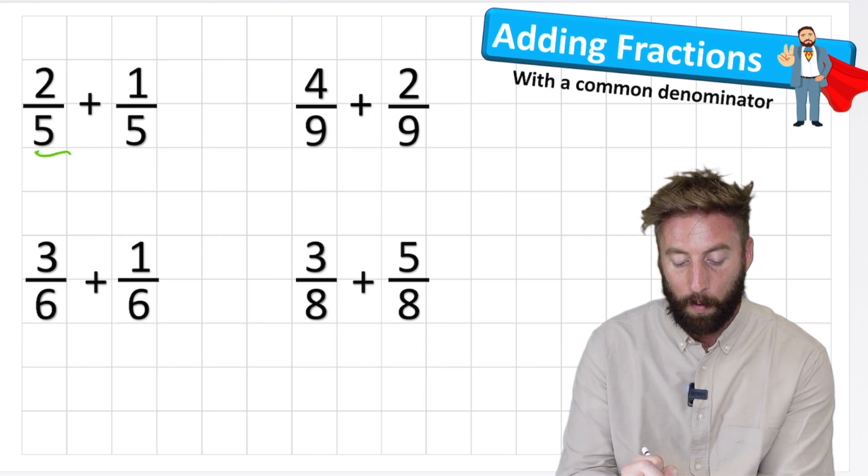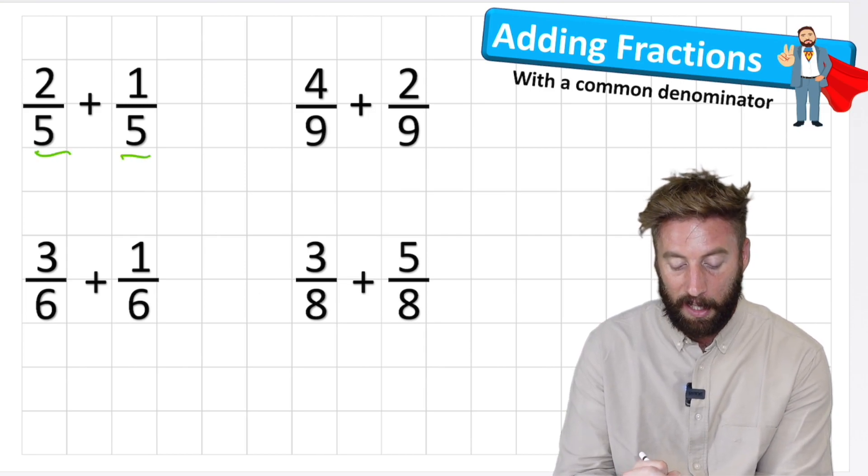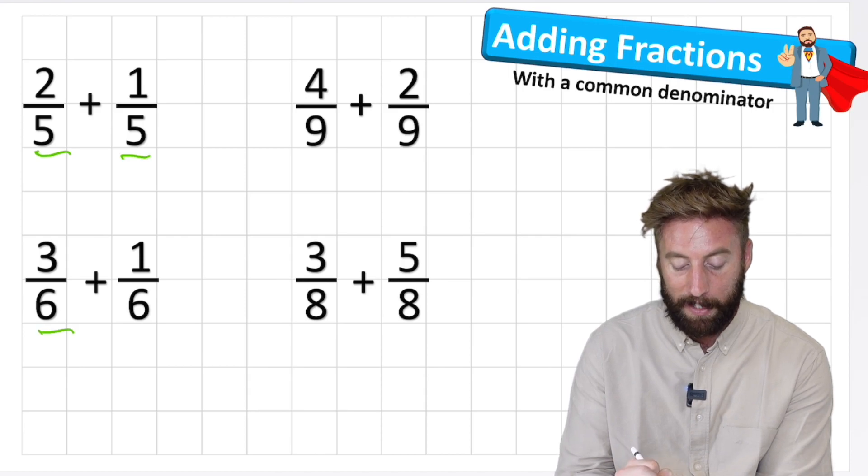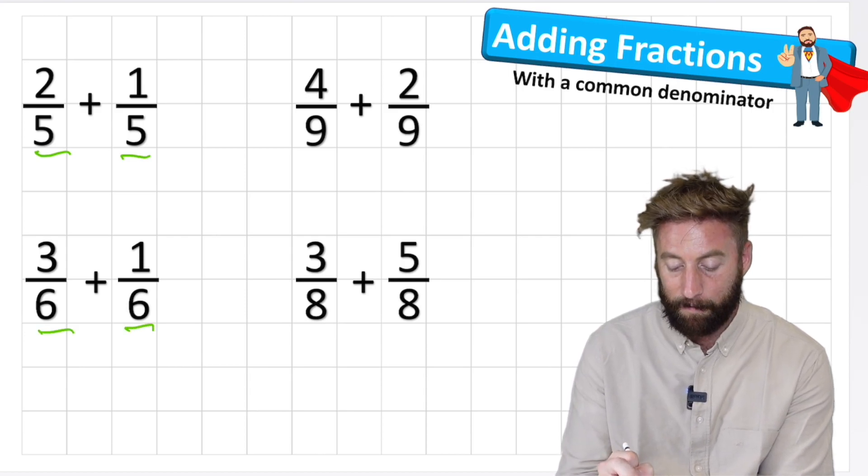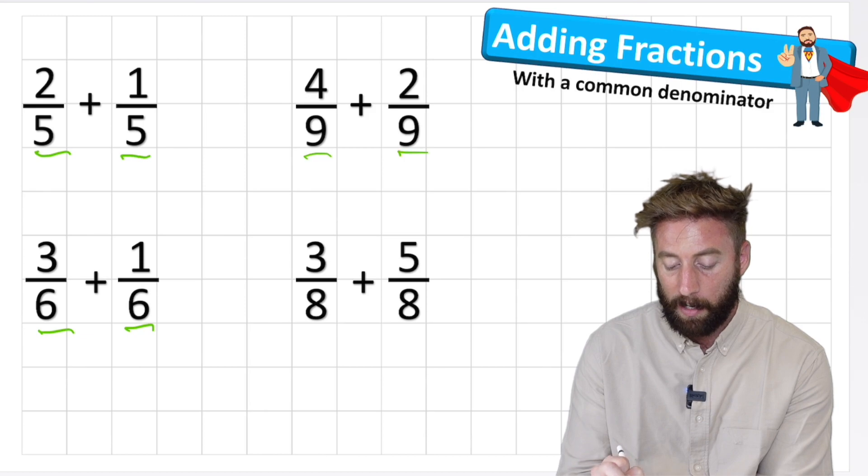So you can see in our four questions here all of our denominators are the same. In two fifths and one fifths we have five as our denominator, in three sixths add one sixth we have six as our denominator, and in four ninths and two ninths we have nine, three eighths and five eighths we have eight.